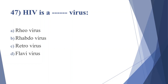Forty-seventh question: HIV is a — option A: rheovirus, option B: rhabdovirus, option C: retrovirus, option D: flavivirus. Answer is option C, retrovirus.